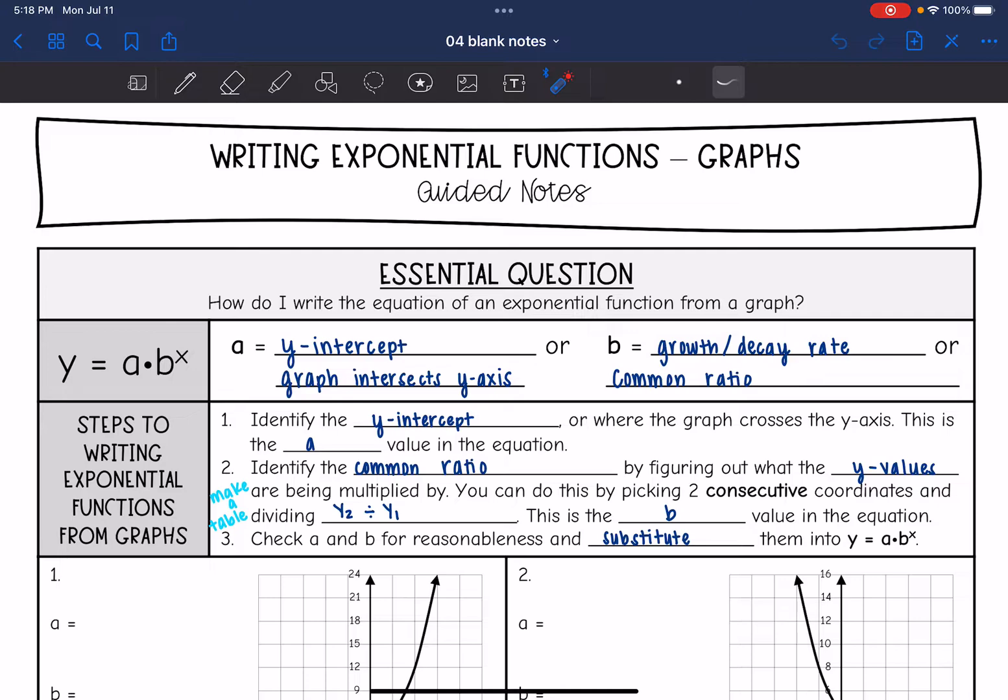So remember, exponential functions are in the form y equals a times b to the x. A is the y-intercept, which is where the graph intersects the y-axis, and b is the growth or decay rate or the common ratio.